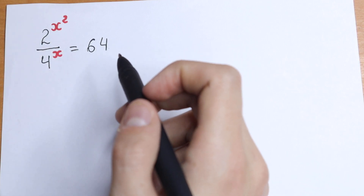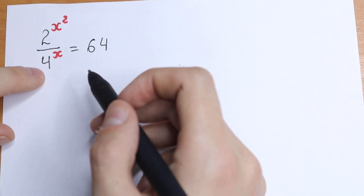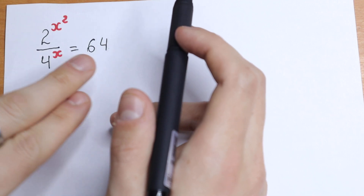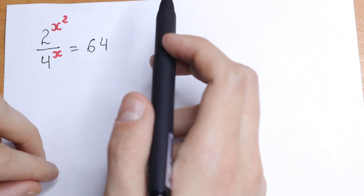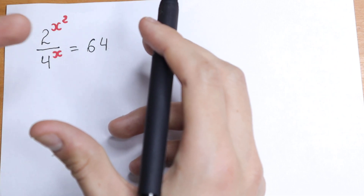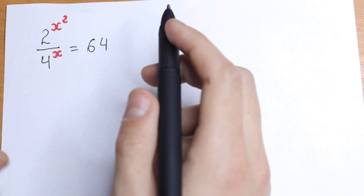But take a look. This is 2, we can write this 4 as 2 squared — that's good for us. And this 64 we can write as 2 to the sixth power. So we will have base 2 everywhere.